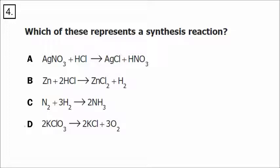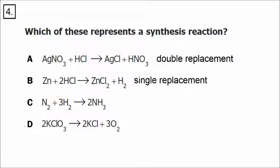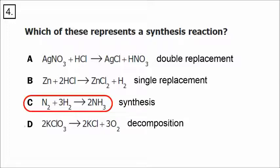In number four, we have four different chemical reactions. The first is a double replacement because the two partners are switching — two compounds form two new compounds. The second is a single replacement: element plus compound produces a new element and a new compound. The last one starts with a compound that breaks down into smaller, simpler compounds — that's decomposition. The opposite of decomposition is synthesis, where you form one compound from smaller substances or elements. Because letter C forms one compound, it is a synthesis.